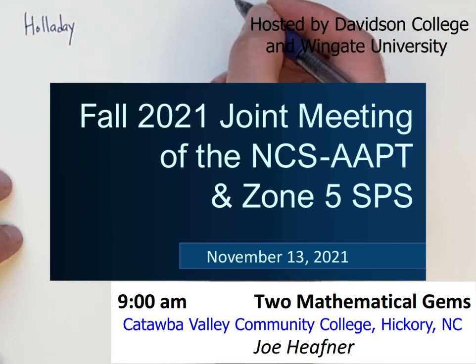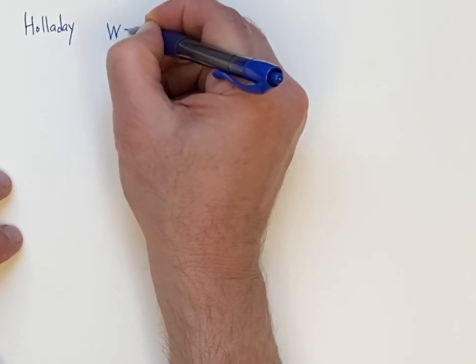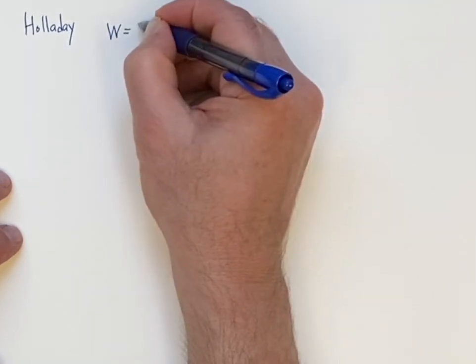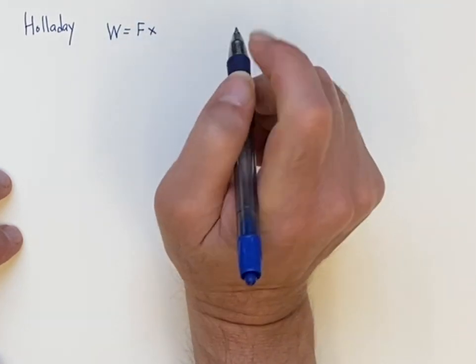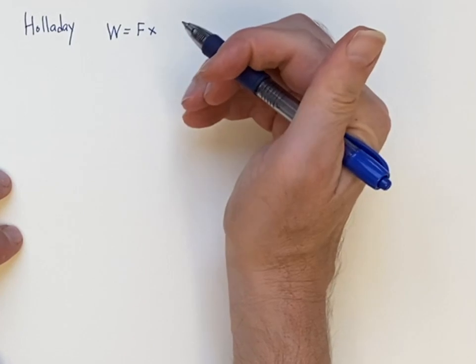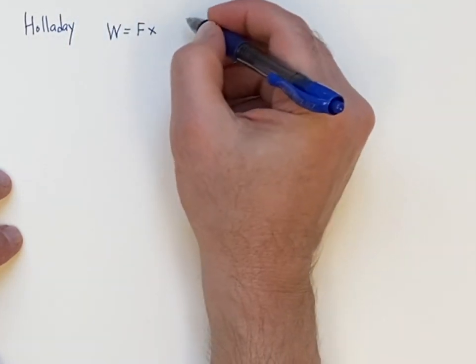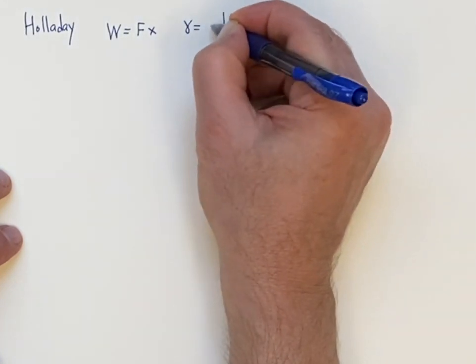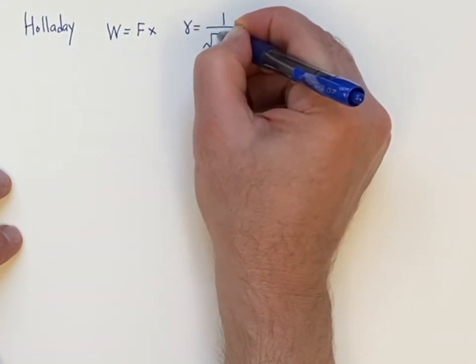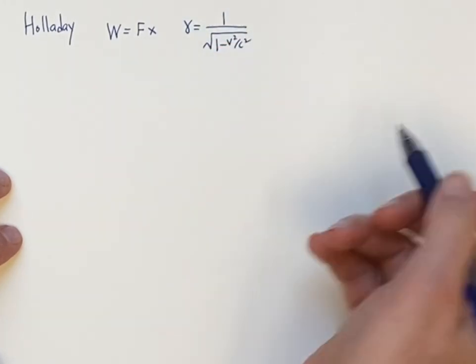What you need for this derivation is to know that work is given by force times distance. I'm going to give you the one-dimensional simplified version of Holladay's derivation. And you also need to know, from relativity, the gamma factor, which arises naturally.